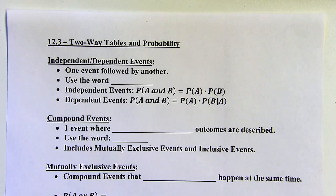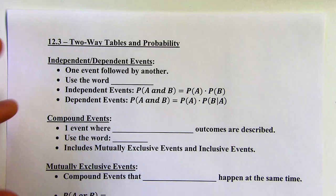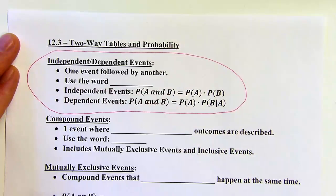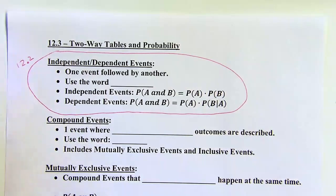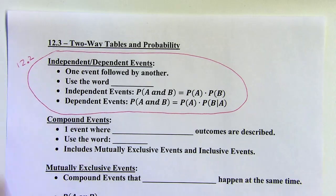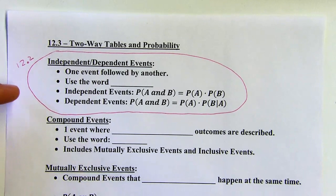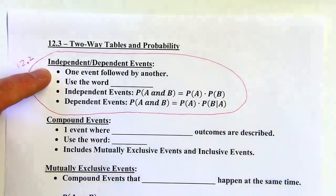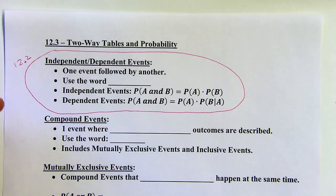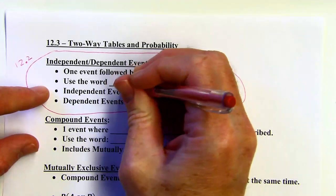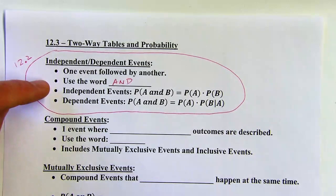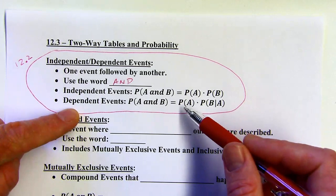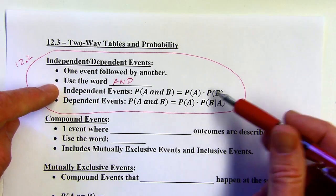This is 12.3: Two-Way Tables and Probability. In 12.2 we talked about independent and dependent events. This is a recap because these sometimes get confused with compound events. With independent and dependent events, it's one event followed by another — like drawing a card from a deck and then drawing another card — and we use the word 'and.' Those events may or may not affect each other.